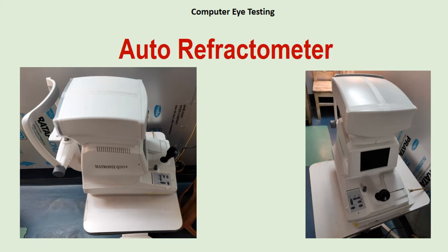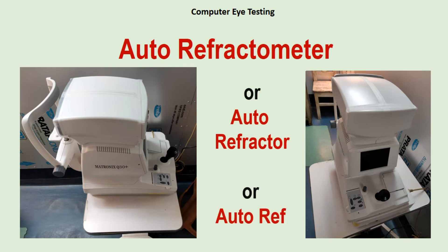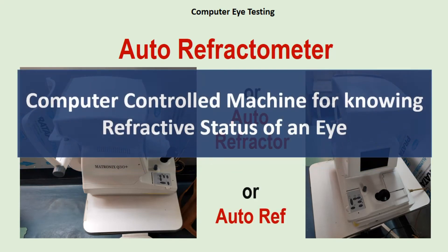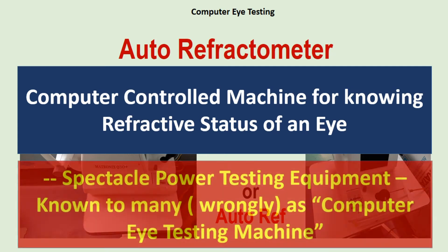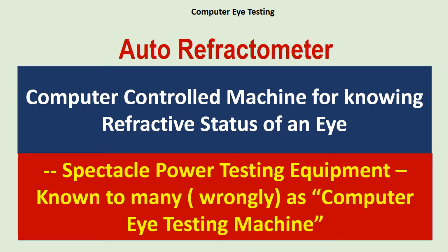First, the machine. The machine with which eyes are usually tested in different optician shops is known as auto refractometer, or auto refractor, or auto ref in short. It's a computer-controlled machine for knowing the refractive status of an eye — or simply put, spectacle power testing equipment, known to many as a computer eye testing machine.